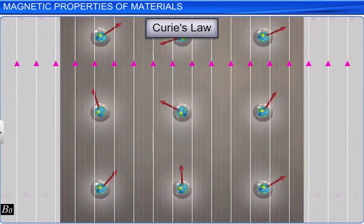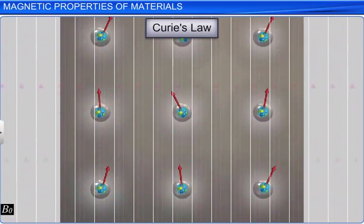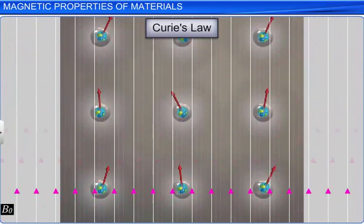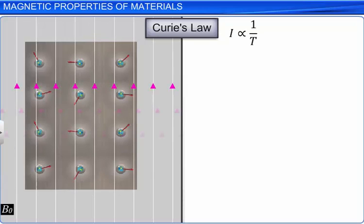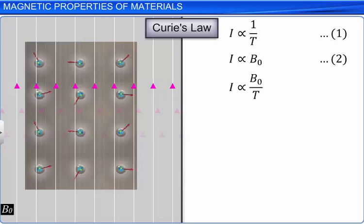The magnetization of the paramagnetic material is inversely proportional to its absolute temperature; that is, I is inversely proportional to T. The magnetization is directly proportional to the applied magnetic induction; that is, I is directly proportional to B0. By combining these two equations, we get I is proportional to B0 by T, which can be written as I is equal to C times B0 by T, where C is the proportionality constant.